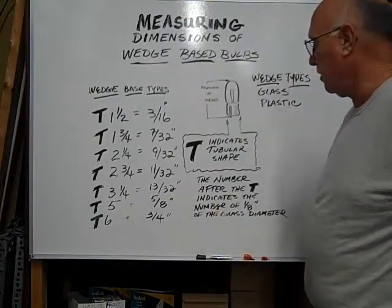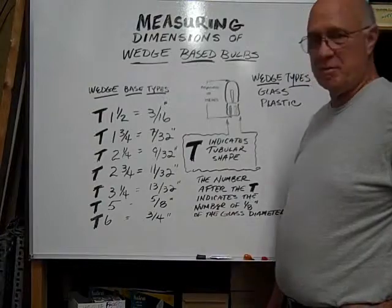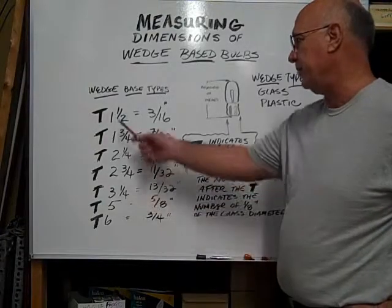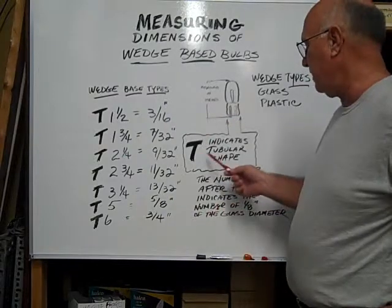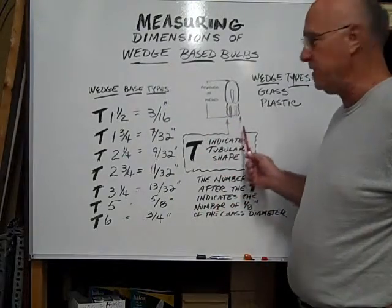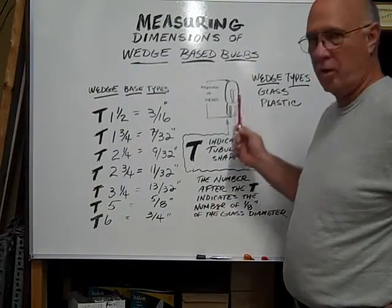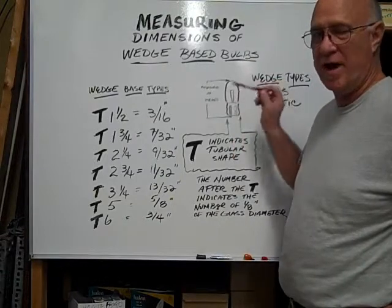Glass wedge-based bulbs are indicated, the diameters are indicated by a T number. You see the different sizes here. The T actually determines that it is a tubular shaped bulb, flat on the sides and usually round on the top.